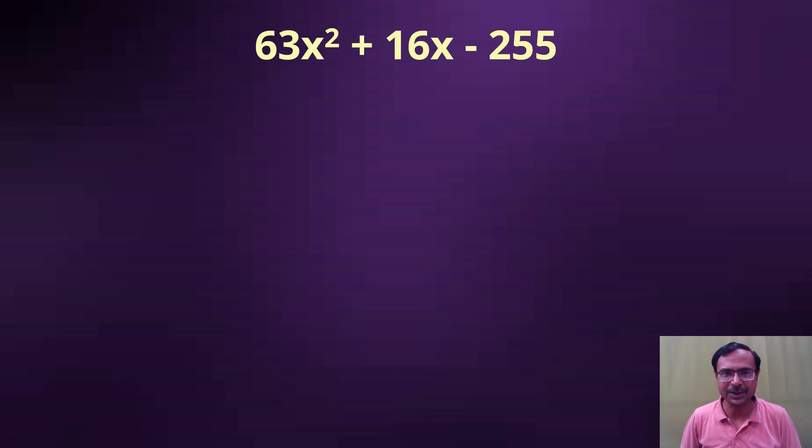The teachers are going to tell you: you have to find two numbers whose sum is the middle term - the coefficient of the middle term plus 16 - and whose product is the product of the first and the last term, that is 63 and minus 255.